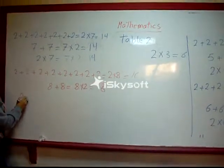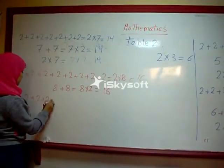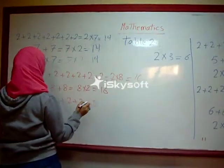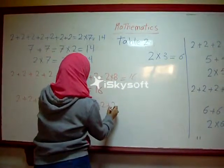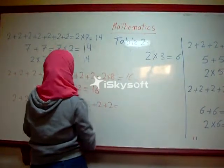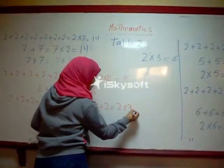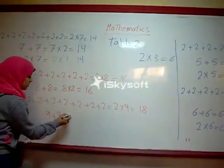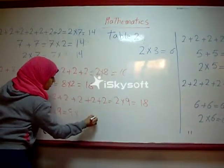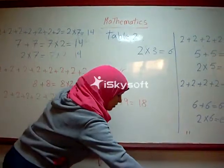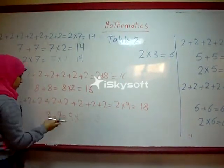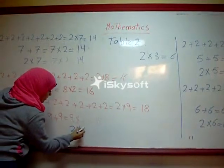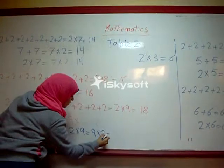Two plus two plus two plus two plus two plus two plus two plus two plus two equals two times nine equals eighteen. Nine plus nine equals nine times two equals eighteen. Then two times nine equals nine times two equals eighteen.